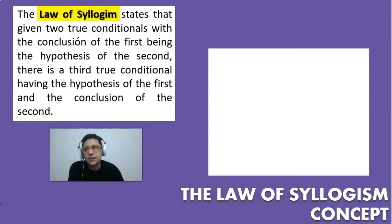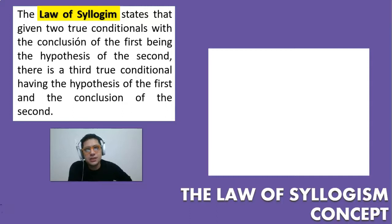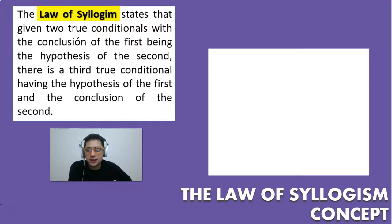So the law of syllogism states that given two true conditionals — we have to assume that they are both true — with the conclusion of the first being the hypothesis of the second, there is a third true conditional having the hypothesis of the first and the conclusion of the second. This may seem confusing, so let's try looking at the formula.